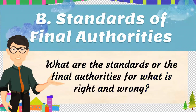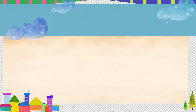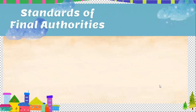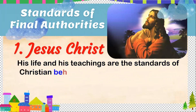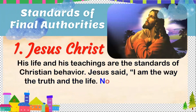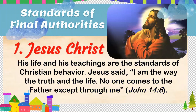Let's proceed to the standards or final authorities. What are the standards or the final authorities for what is right and wrong? The first one can be found in Jesus Christ. His life and teachings are the standards of Christian behavior. Jesus said, 'I am the way, the truth, and the life. No one comes to the Father except through me,' as found in John 14, verse 6.